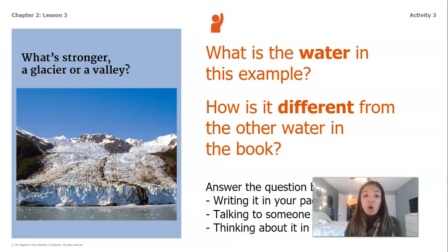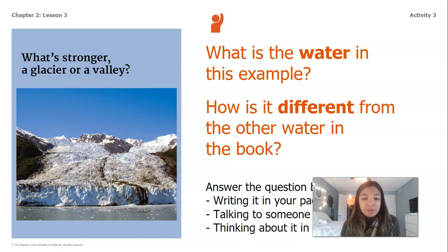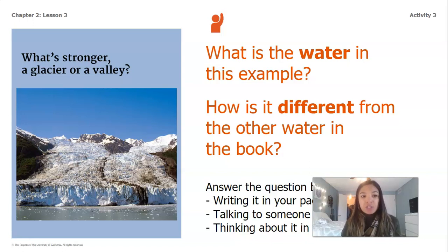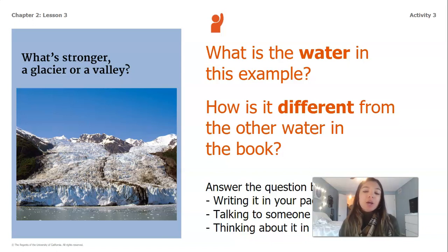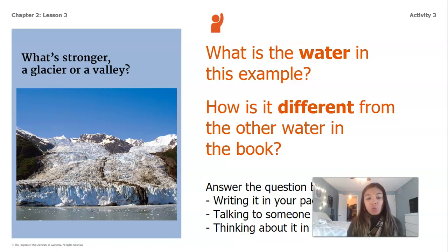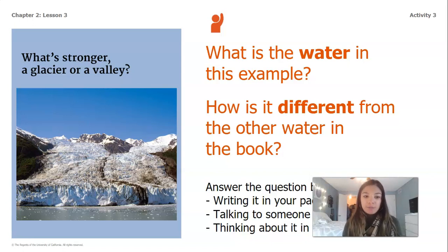Our example of water in this picture is the glacier. What's different about the water here is that this is actually an example of a solid form of water, because the glacier is actually made of ice. In our book, we've seen other examples where the water is in liquid form, whether that's a river, a stream, or a beach. That is a difference in the way the water is shown.